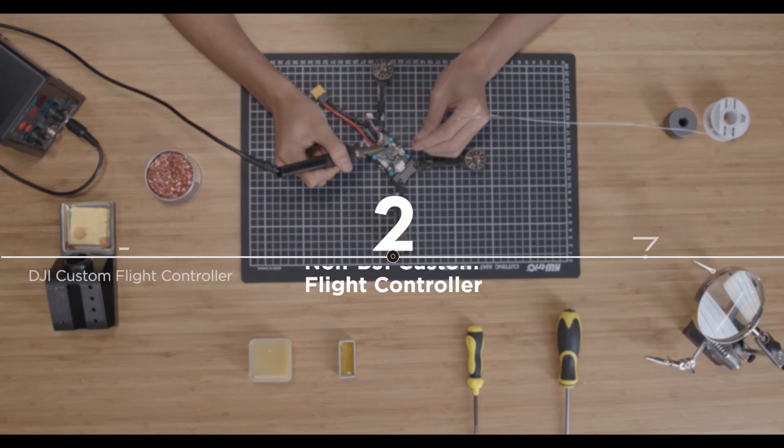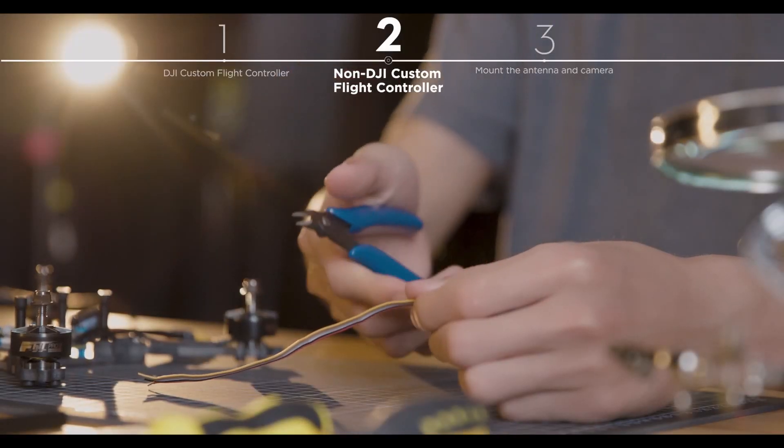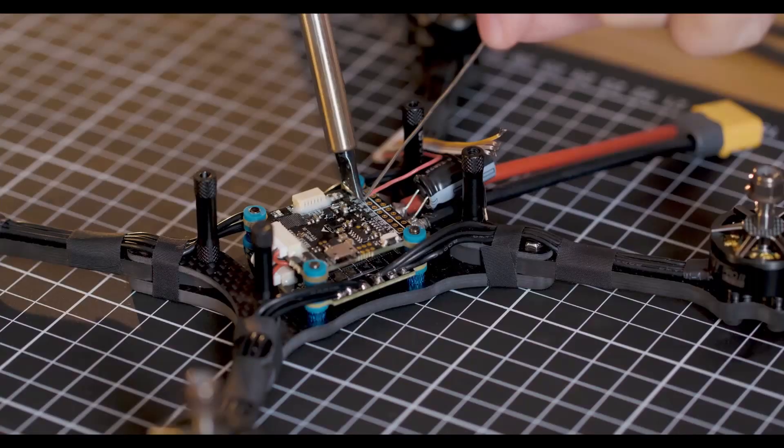If you are not using the DJI custom flight controller, first cut the 3-in-1 cable to an appropriate length and strip off about 3mm of copper wire for later.